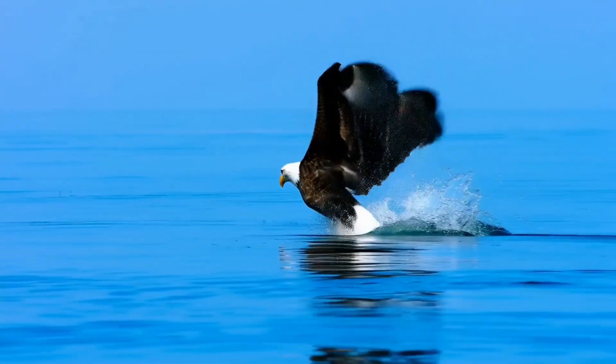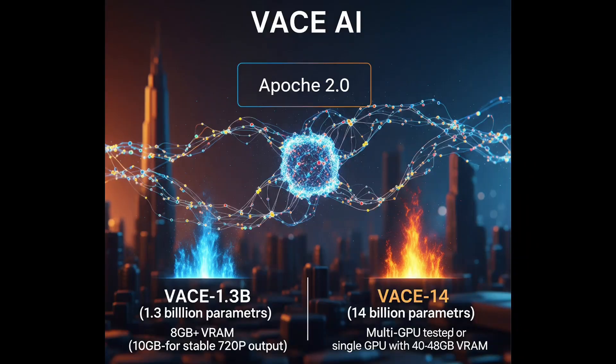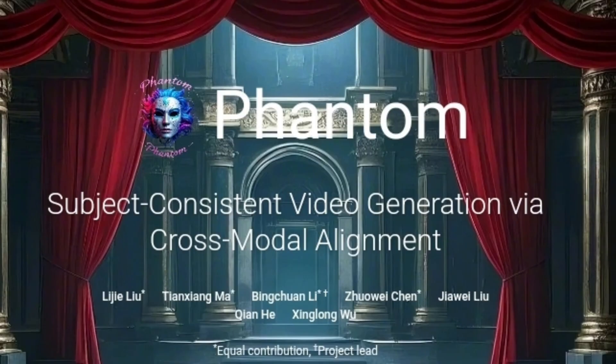The Vase code is already on GitHub and fully open source under the Apache 2.0 license, which means you can use it, modify it, and redistribute it as long as you follow the terms. Vase comes in two modules: Vase 1.3B — 1.3 billion parameters — which you can run locally on a single GPU with about 8GB of VRAM; for stable 720p output, aim for 10GB+. Vase 14B — 14 billion parameters — for the largest model, you'll need either a multi-GPU setup or a single GPU with 40–48GB.